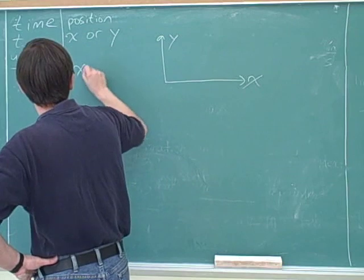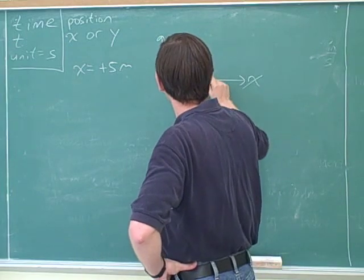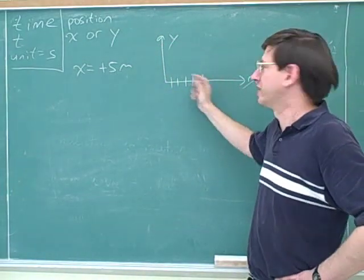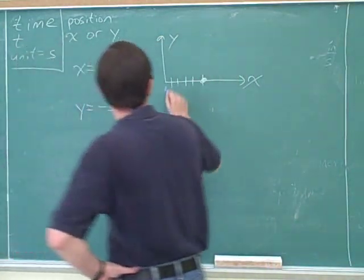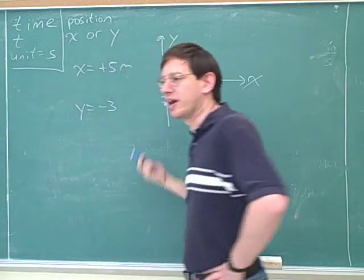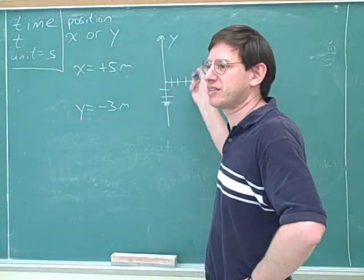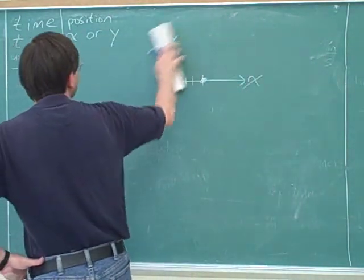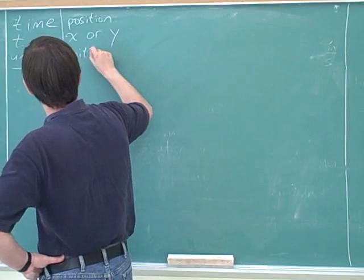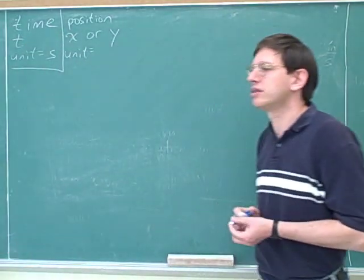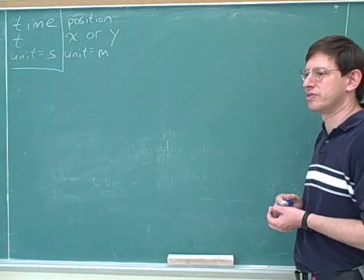So, for example, you might say x equals positive 5 meters. And then you would know that the object is here, if we're ignoring the y component. Or you might say y equals negative 3 meters. And then you would know the object is here, if we're ignoring the x component. So in this chapter, we're just going to be on the axes. What do you think is the standard SI unit for position? Meters. That's right.